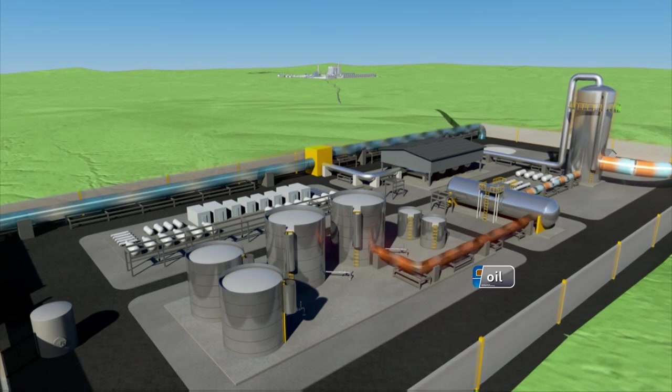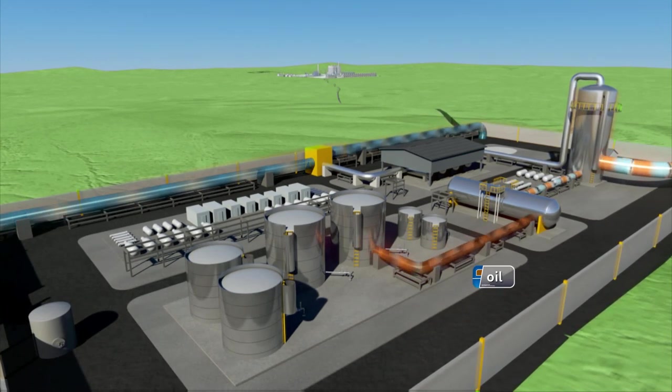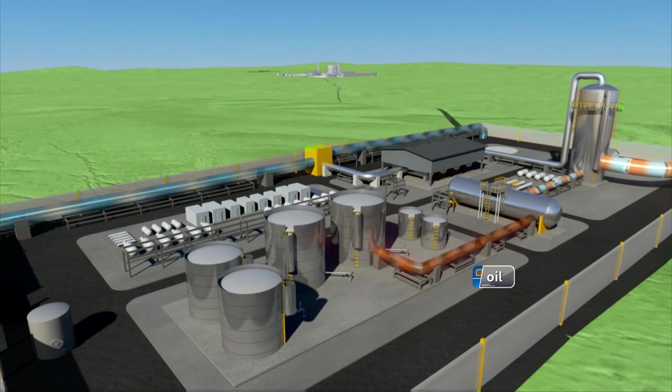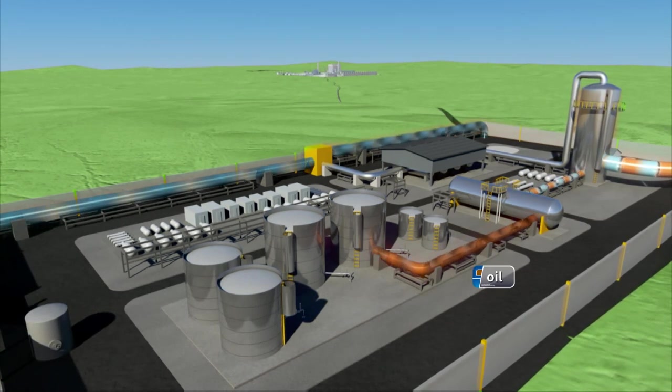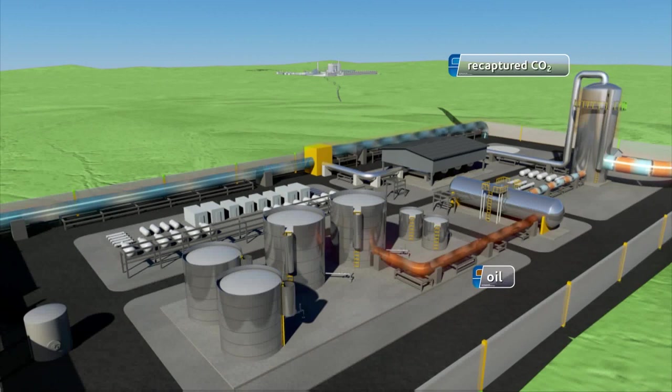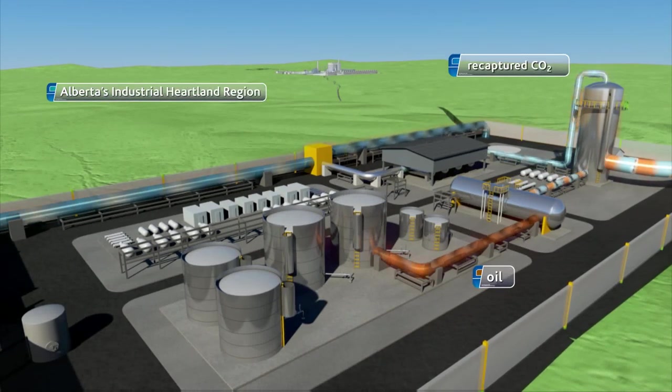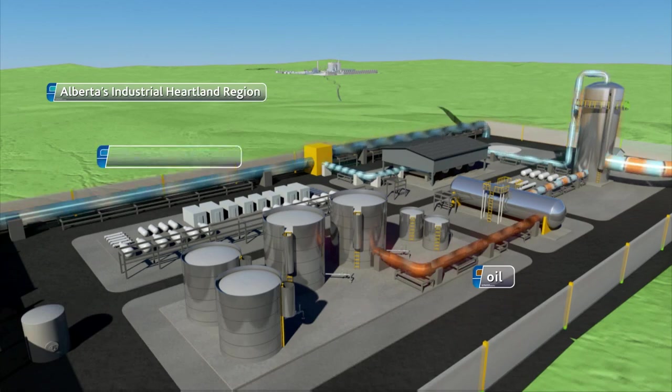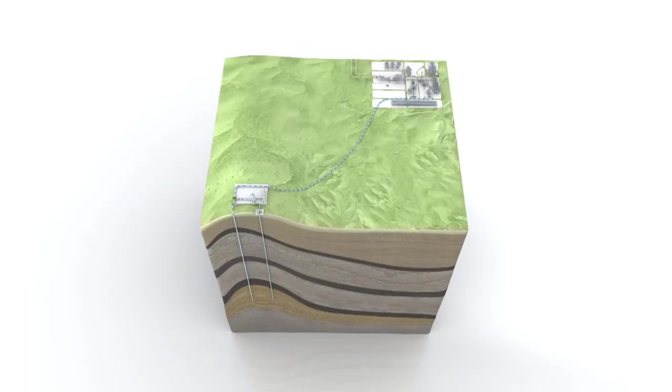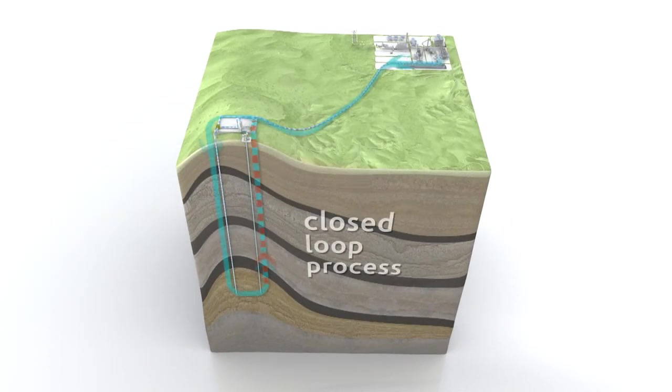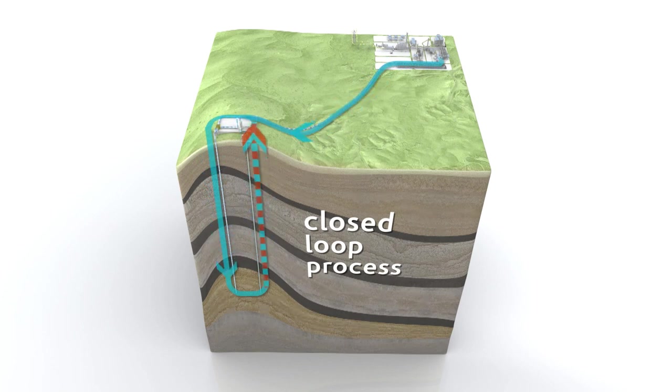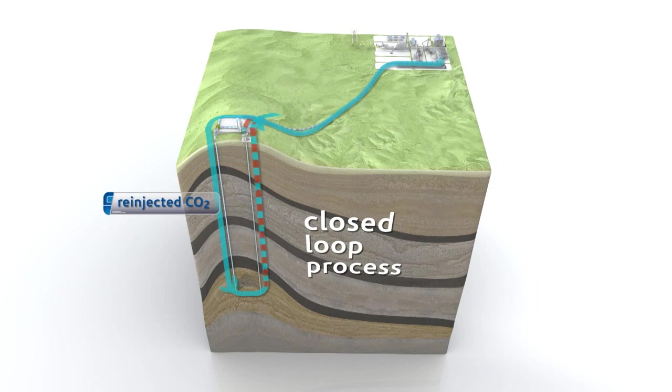A portion of the injected CO2 will be produced with the oil. This CO2 remains contained within the process system at all times. It is separated from the oil and is immediately combined with the CO2 arriving from Alberta's industrial heartland for re-injection into the formation. This is known as a closed-loop process and ensures the injected CO2 is ultimately retained within the reservoir.